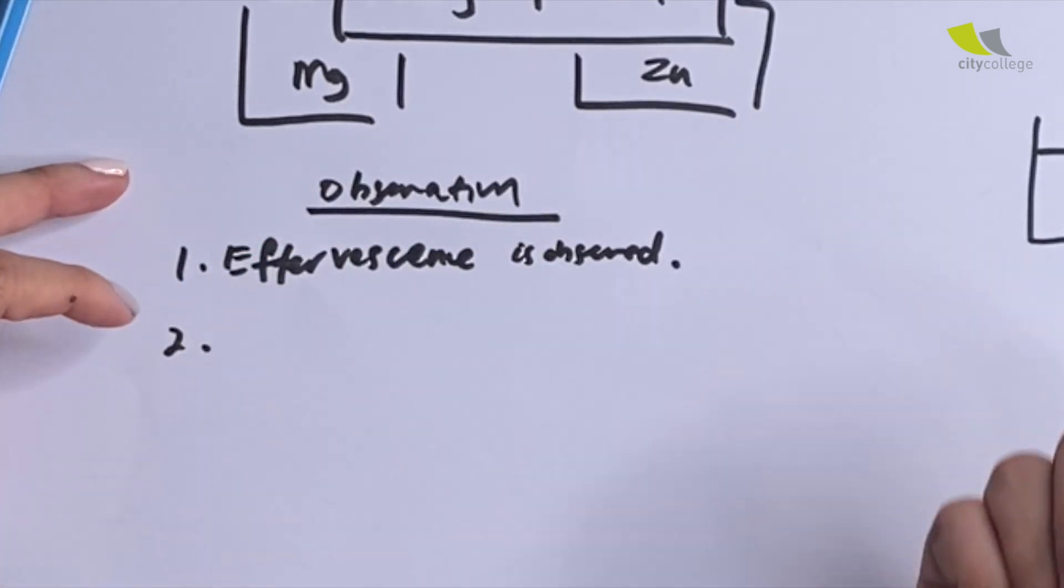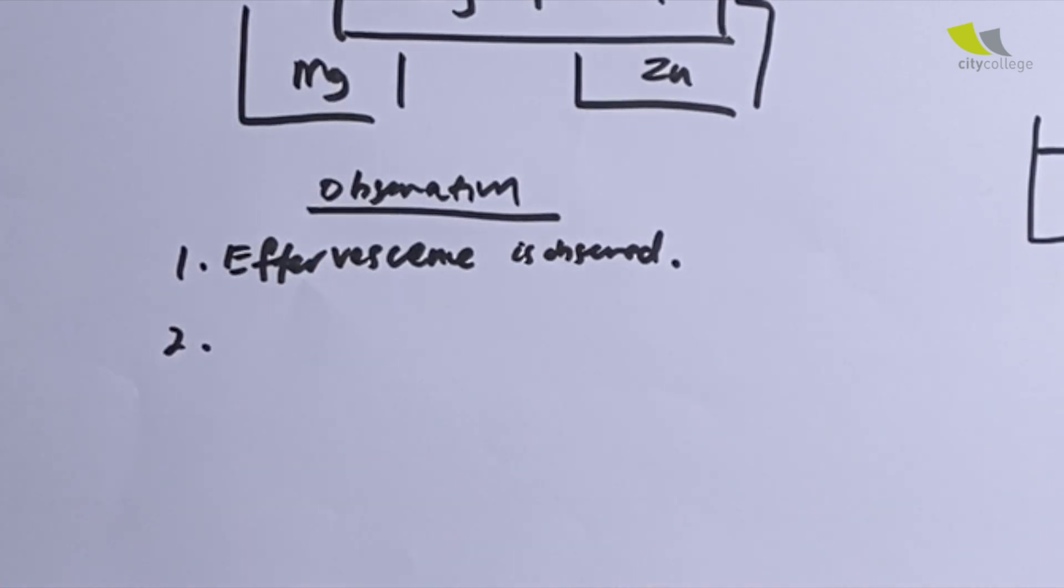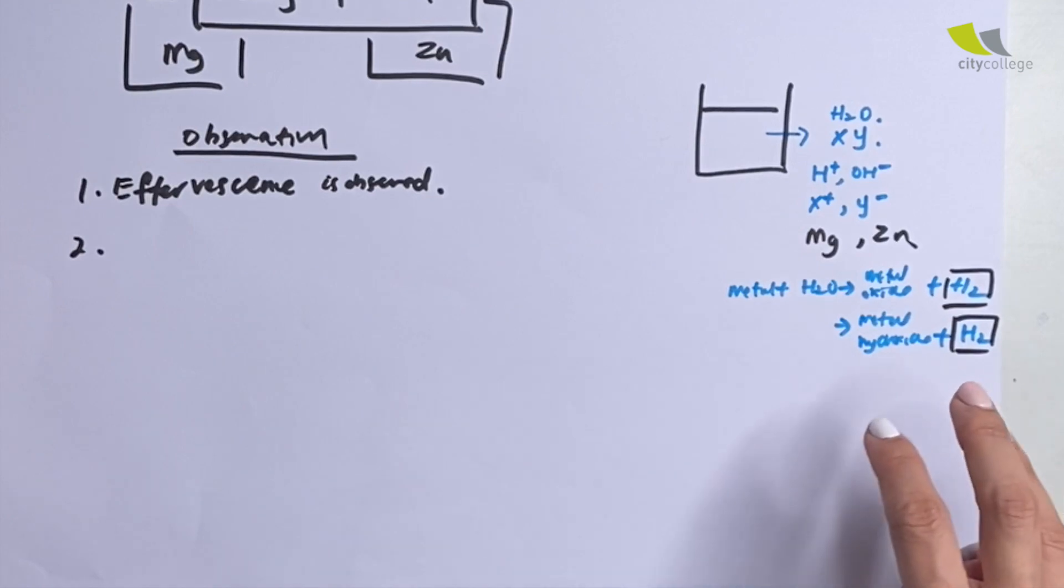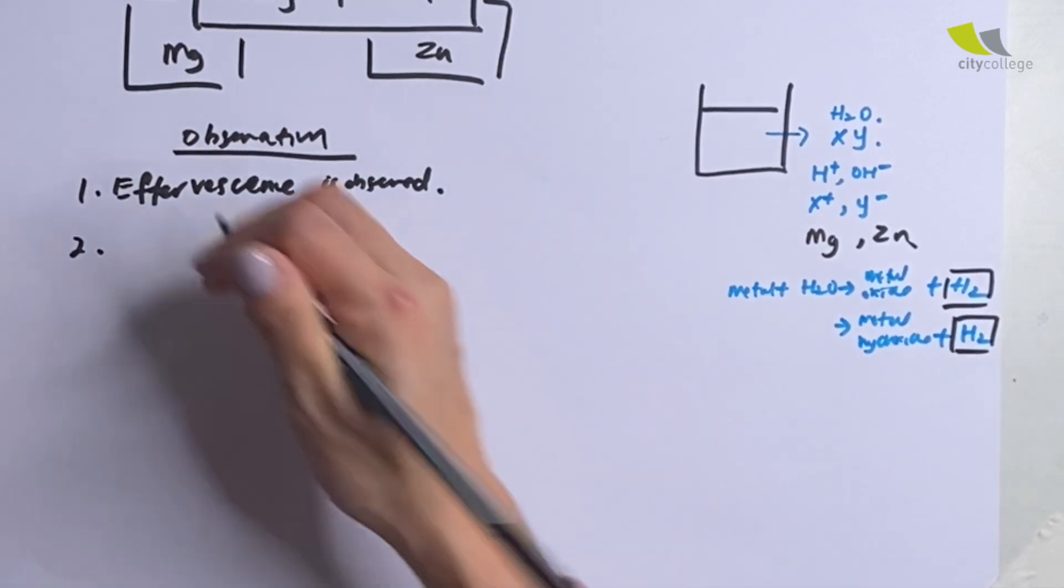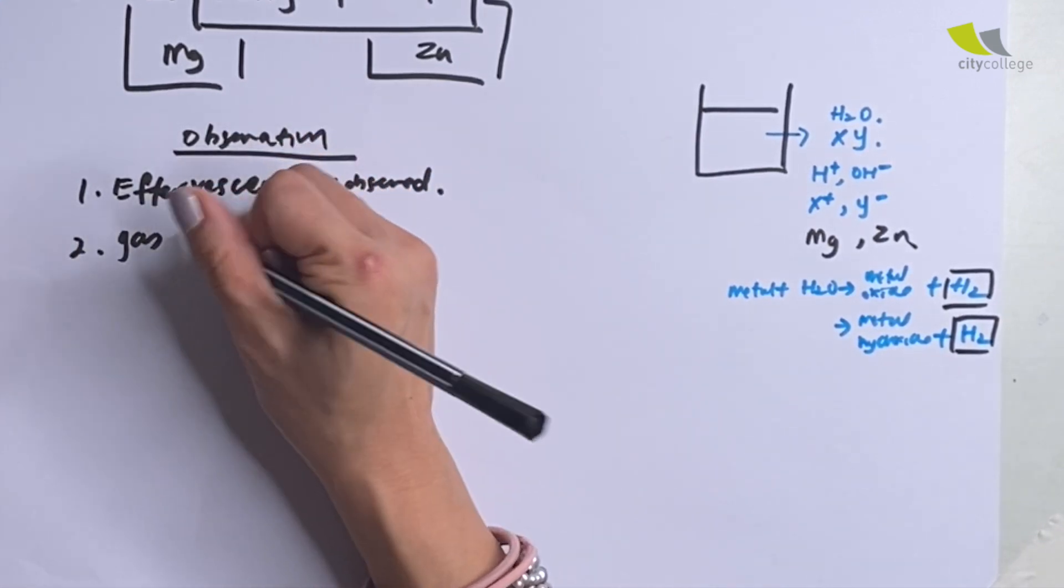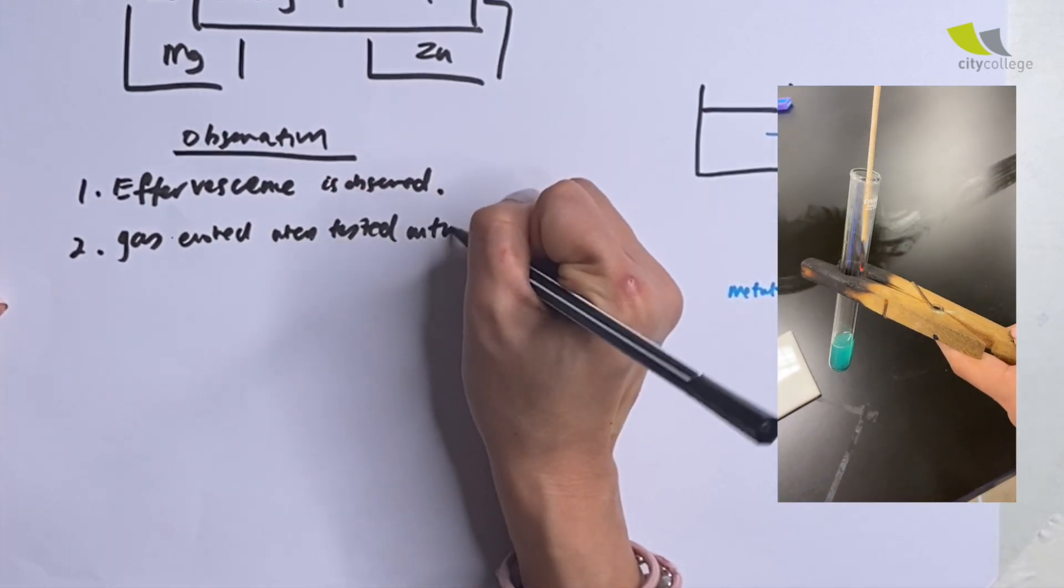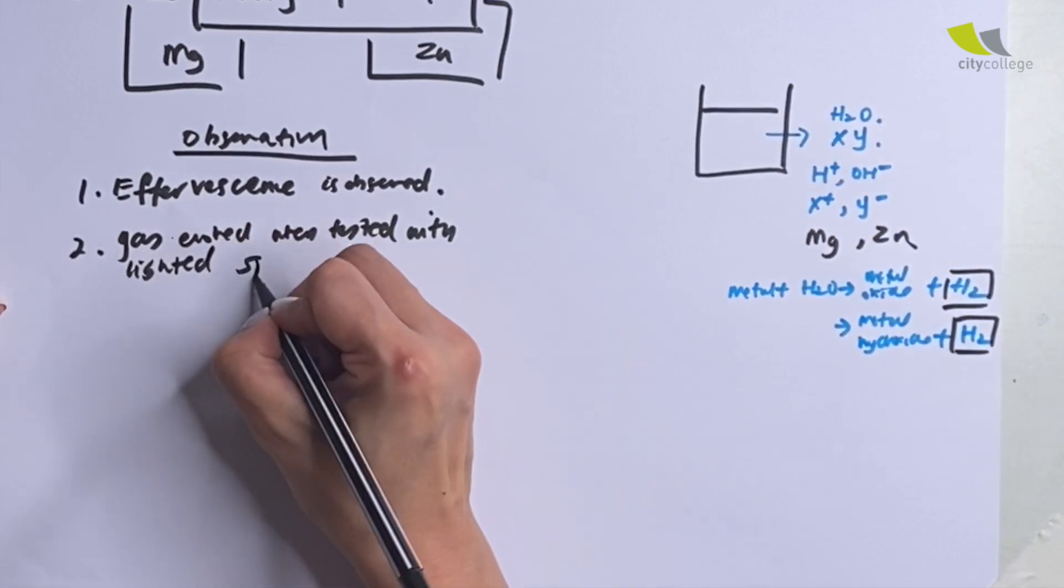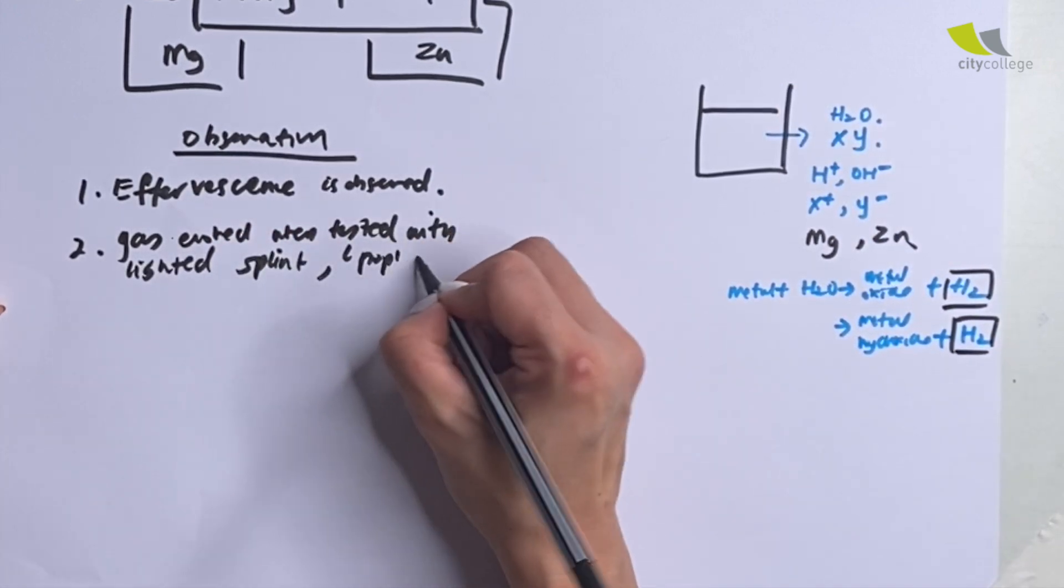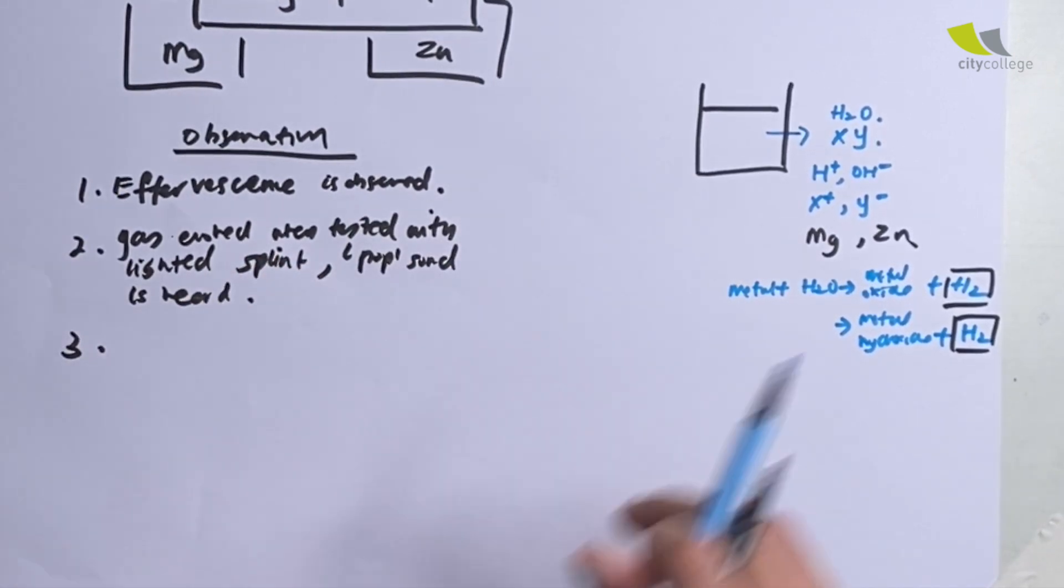second, you have to test for the effervescence. So when I want to test for the effervescence, I will start to prepare a lighted splint. Why? Because I already have in the back of my mind that when I add a metal, hydrogen gas is most likely to be evolved. So I will prepare the lighted splint and then test for it. And if there's a positive test, I will write gas evolved. When tested with lighted splint, a pop sound is heard. So this is the second part.